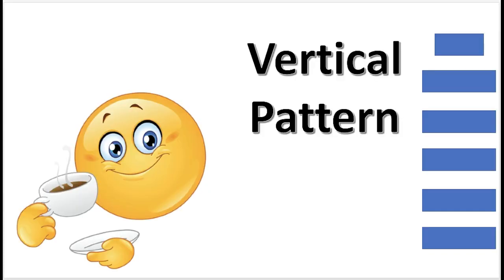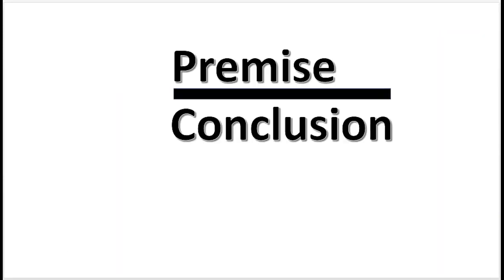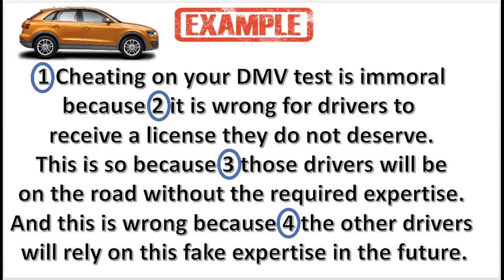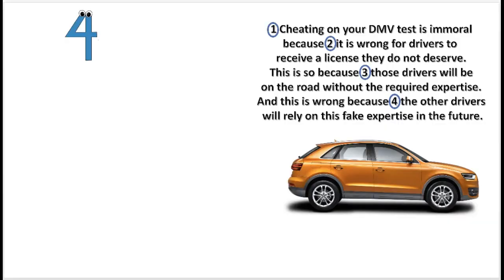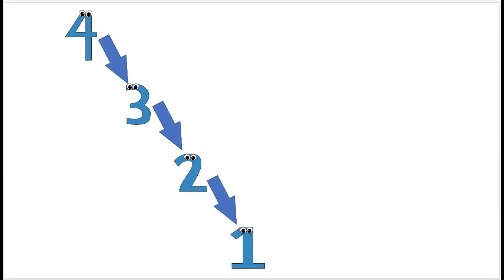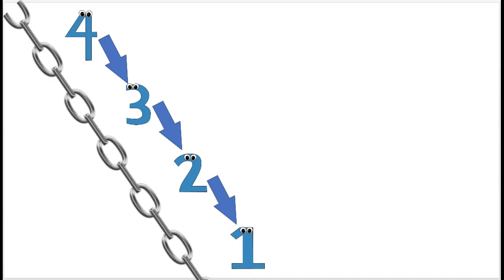The next diagram is called the vertical pattern. The vertical pattern is used when a premise implies a conclusion which in turn implies another conclusion. Here is an example. The diagram will show that statement 4 supports statement 3, which supports statement 2, which supports statement 1. This pattern shows a chain of arguments.